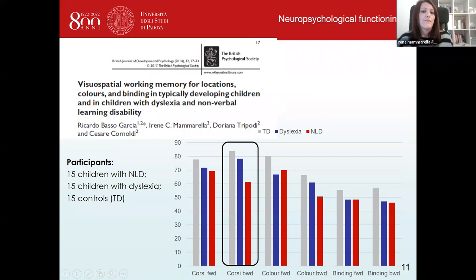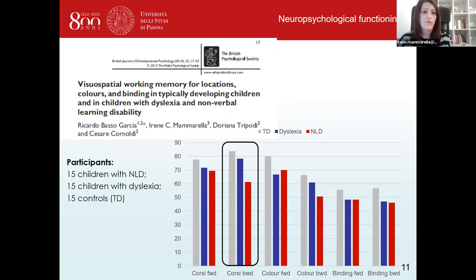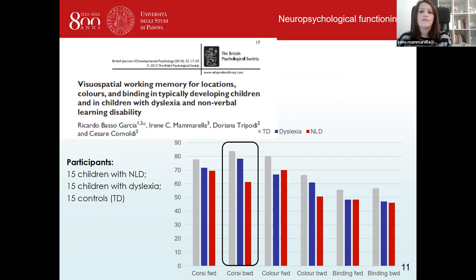In a study published in 2014, we compared children with NLD, children with dyslexia, and children with typical development in visuospatial working memory tasks. We examined forward and backward recall of locations and colors, as well as the binding of locations and colors. We found that children with NLD had particular difficulties in the backward recall of locations, suggesting that visuospatial working memory is another impaired process in children with non-verbal learning disability.